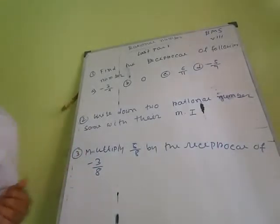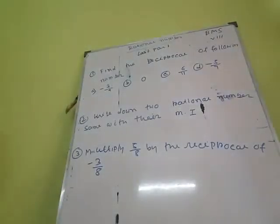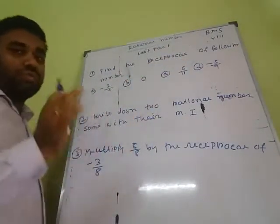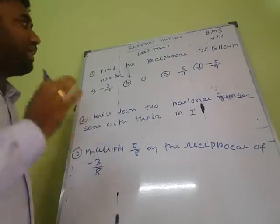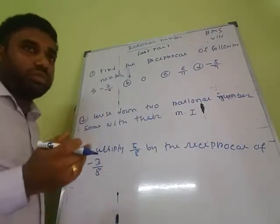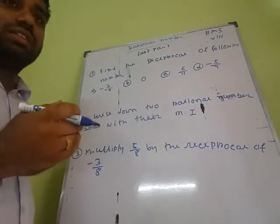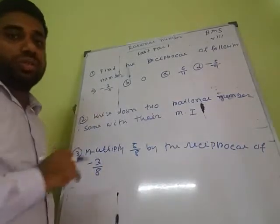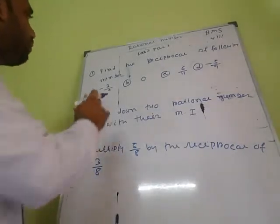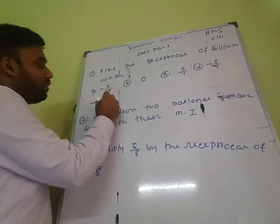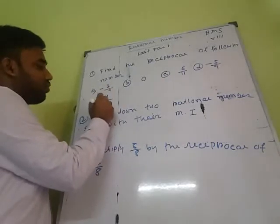The first question of this class is: write the reciprocal of the following numbers. To find the reciprocal, just change the numerator to denominator and denominator to numerator. Reciprocal of minus 3 by 4 equals 4 by minus 3.